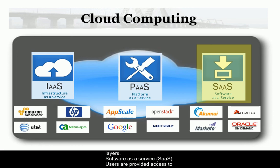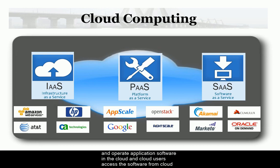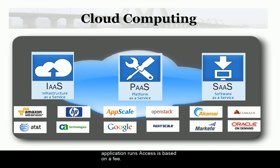Software as a Service (SaaS): users are provided access to application software and databases, while cloud providers manage the infrastructure and platforms that run the applications. In the SaaS model, cloud providers install and operate application software in the cloud, and users access it from cloud clients. Cloud users do not manage the cloud infrastructure and platform where the application runs — access is based on a fee.